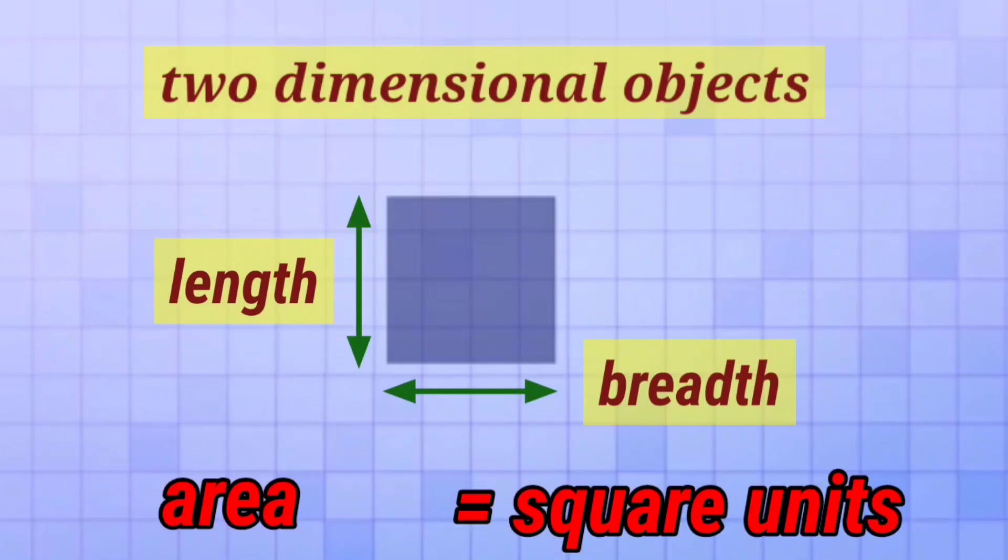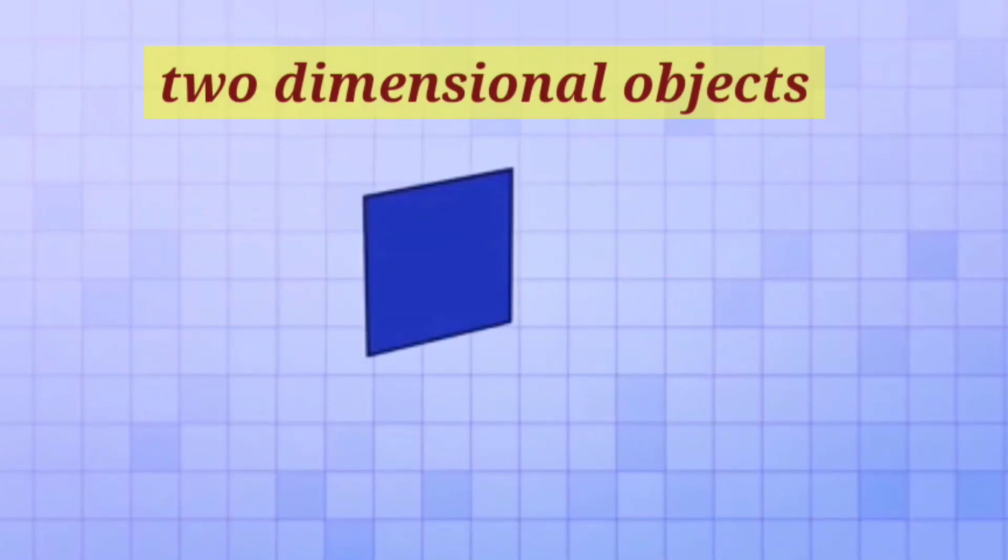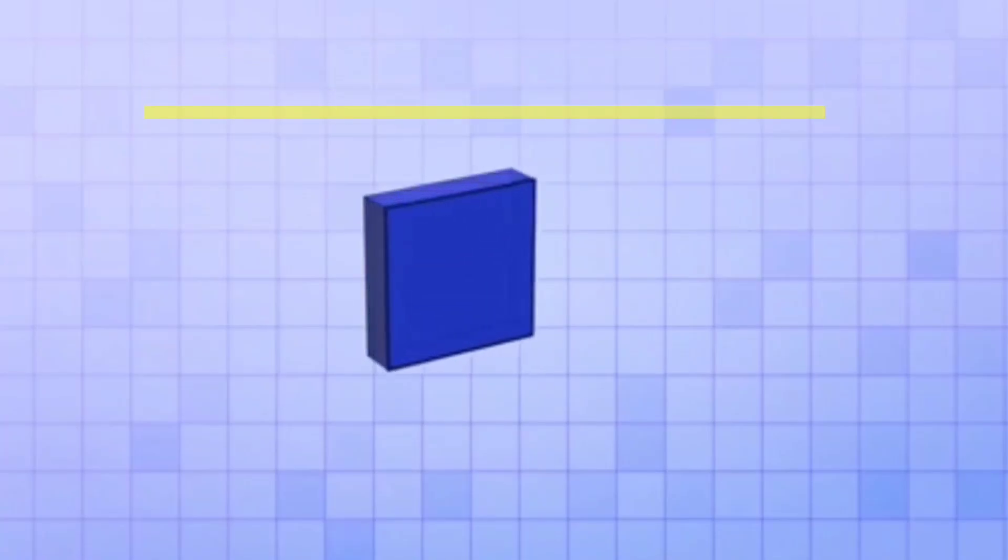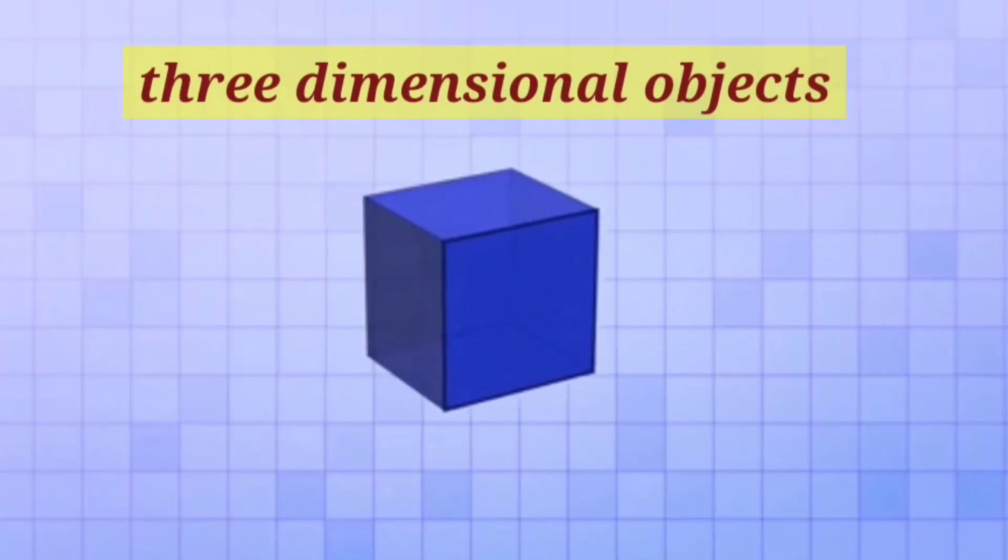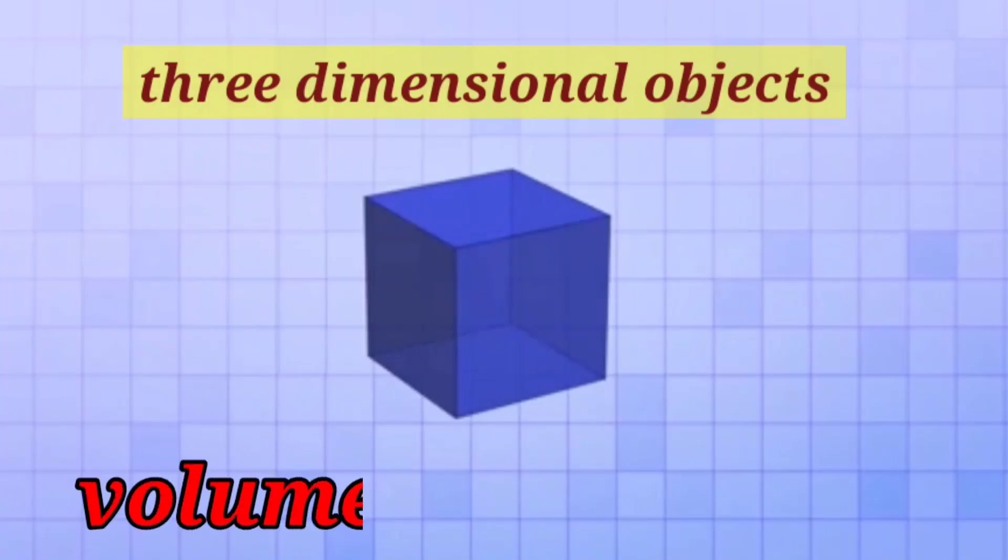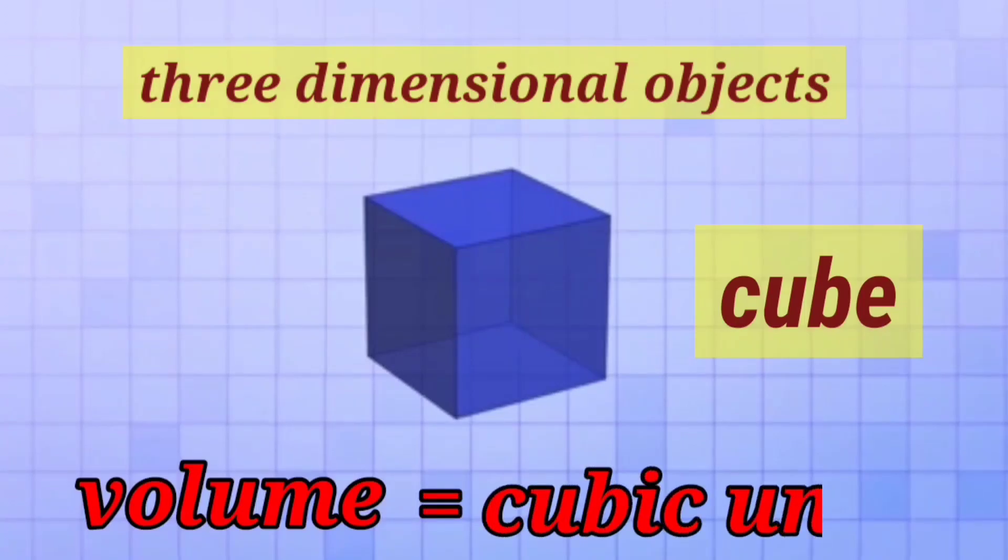If we extend this two-dimensional square in a direction perpendicular to its surface, it forms a three-dimensional object. This object is measured in three-dimensional quantity called volume. This figure having equal sides is a cube, and the volume of all three-dimensional objects is measured in cubic units.